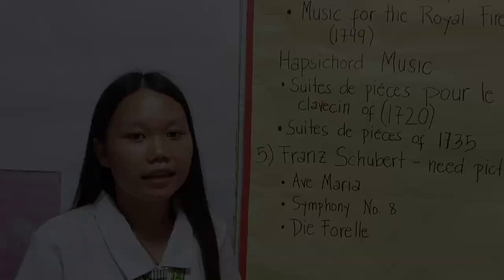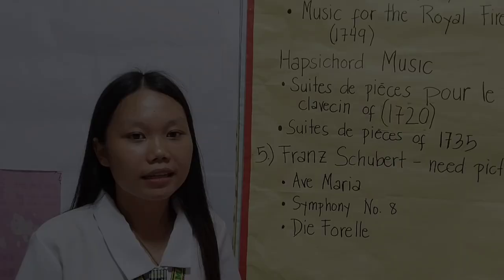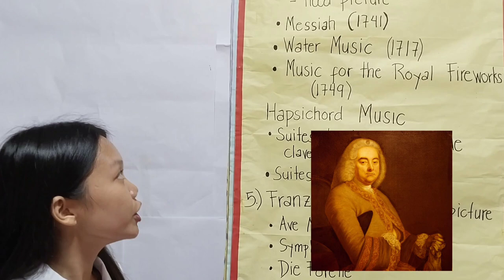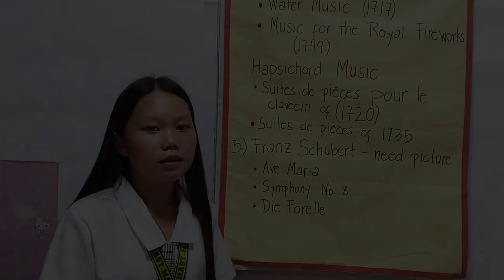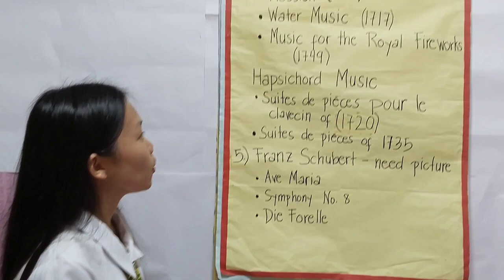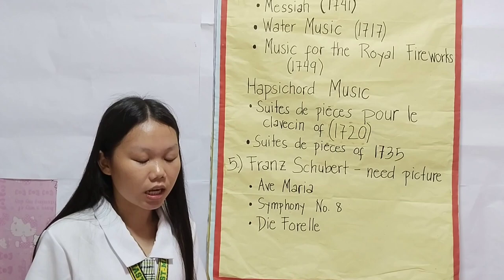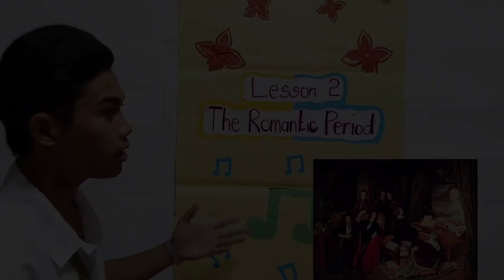George Frideric Handel was a German-British Baroque composer, well known for his oratorios such as Messiah (1741), Water Music (1717), and Music for the Royal Fireworks (1749). He established himself as a brilliant organist and harpsichordist early in his career, and published Suites de Pièces pour le Clavecin of 1720 and Suites de Pièces of 1735.